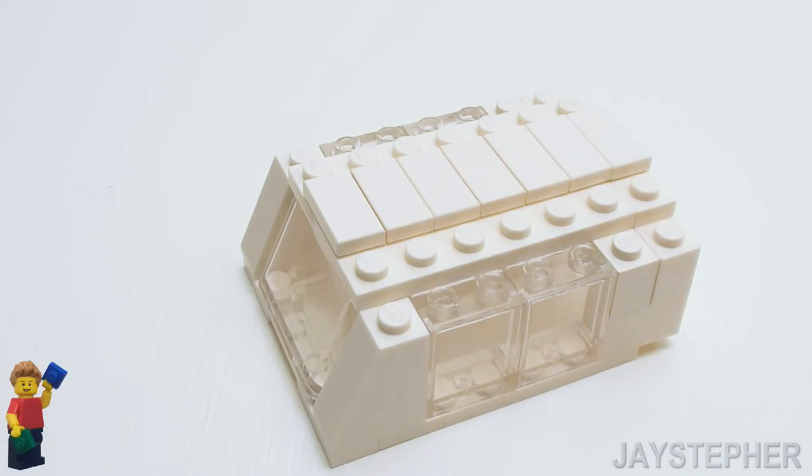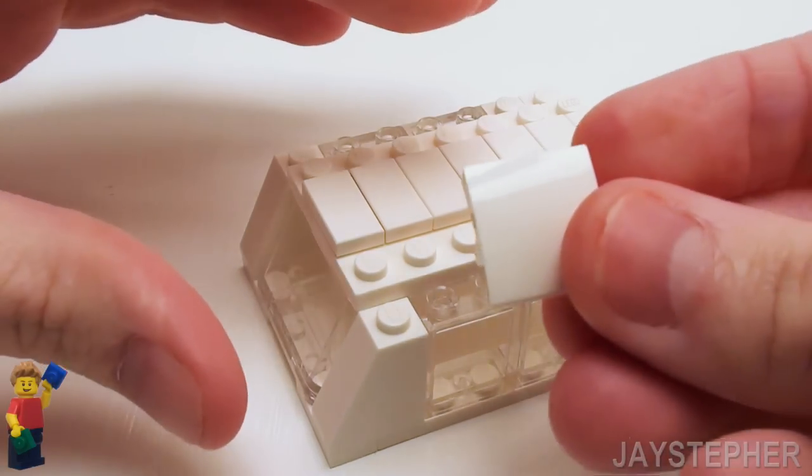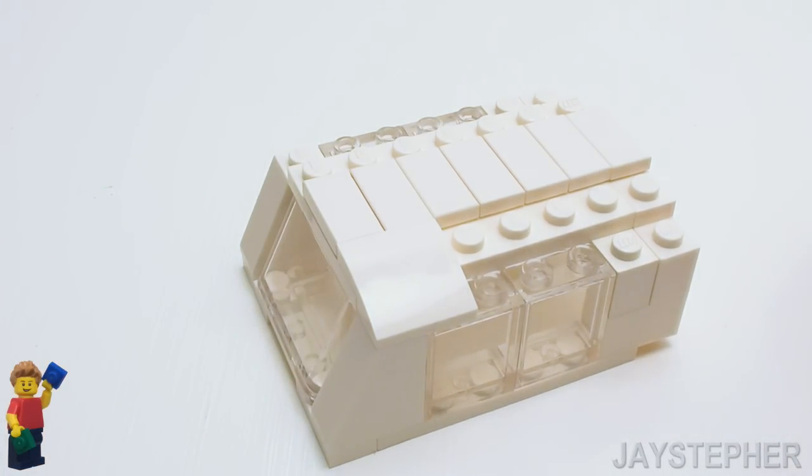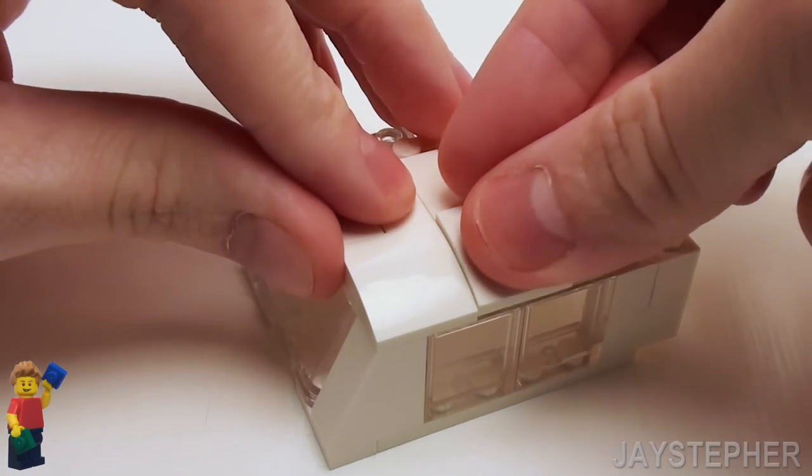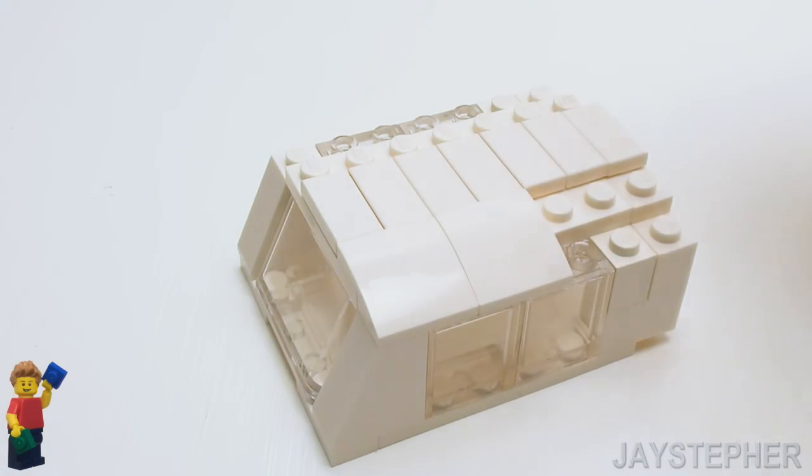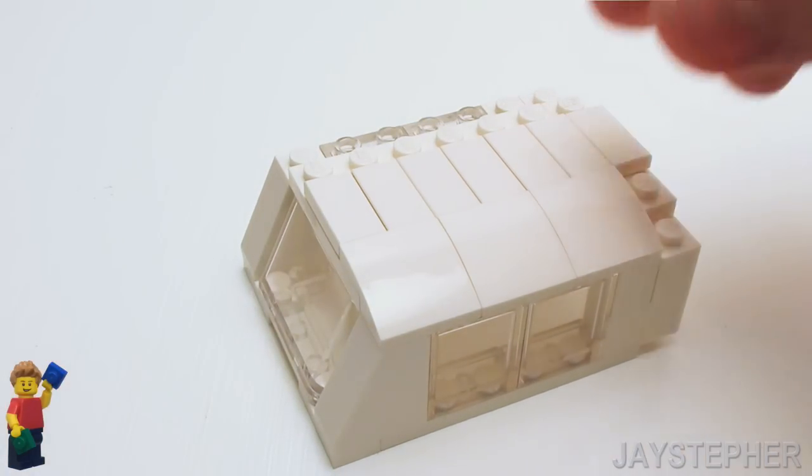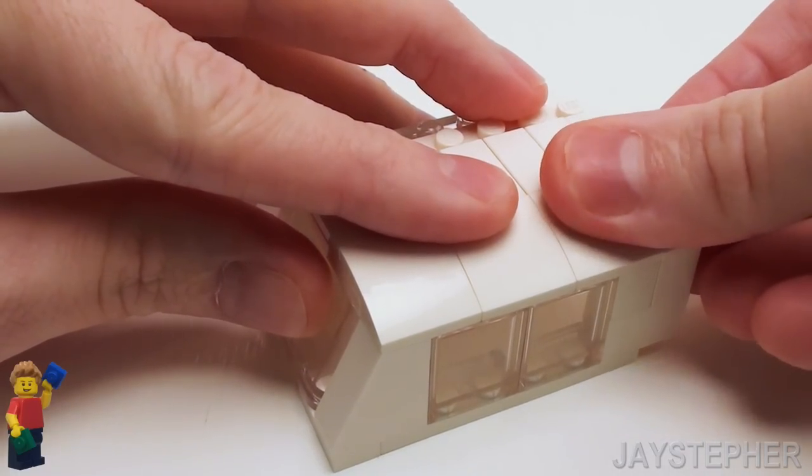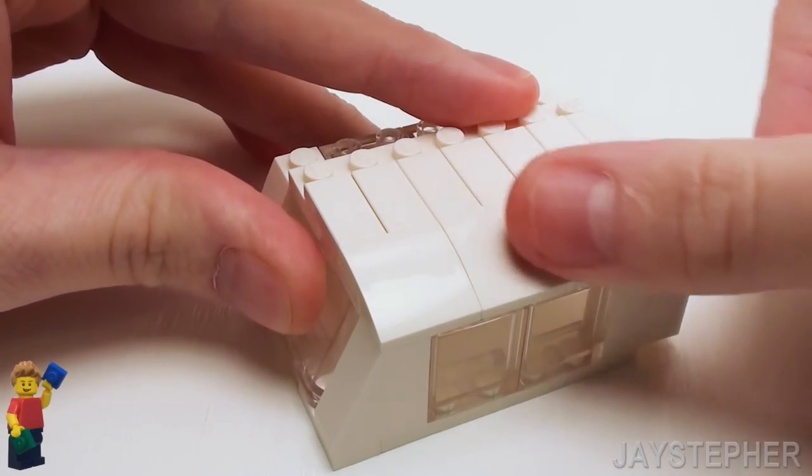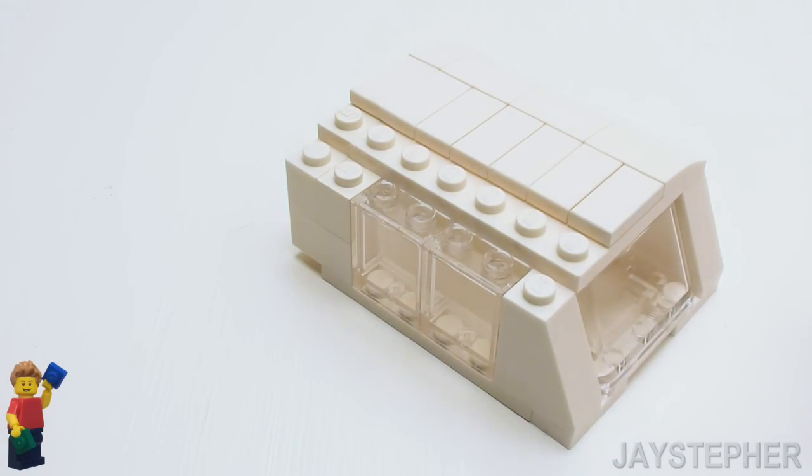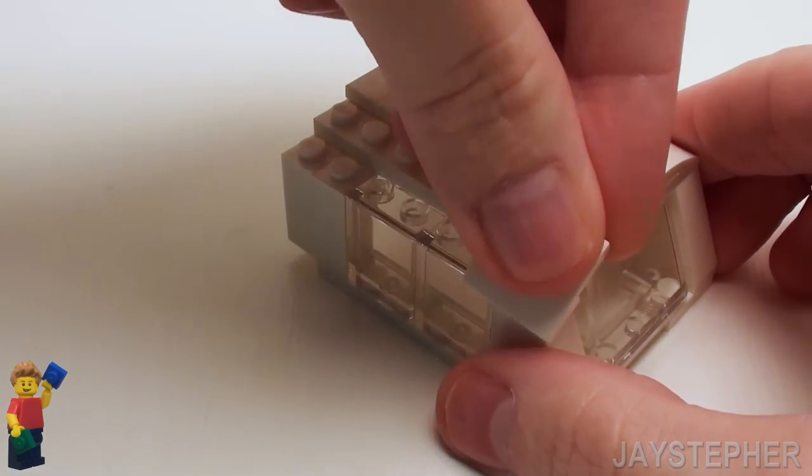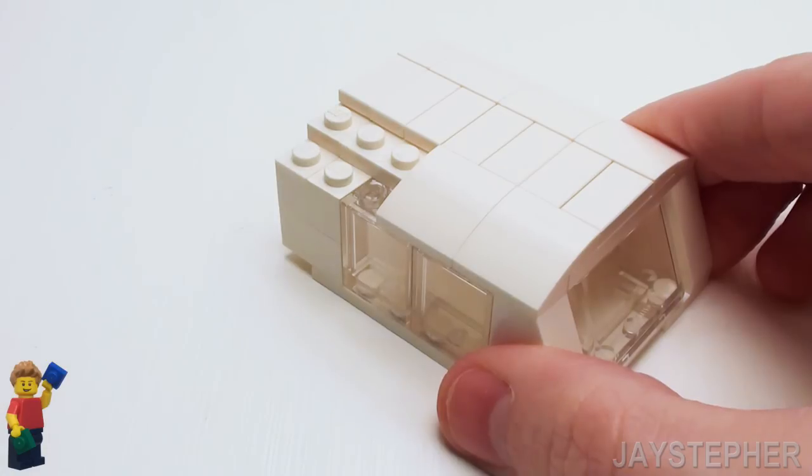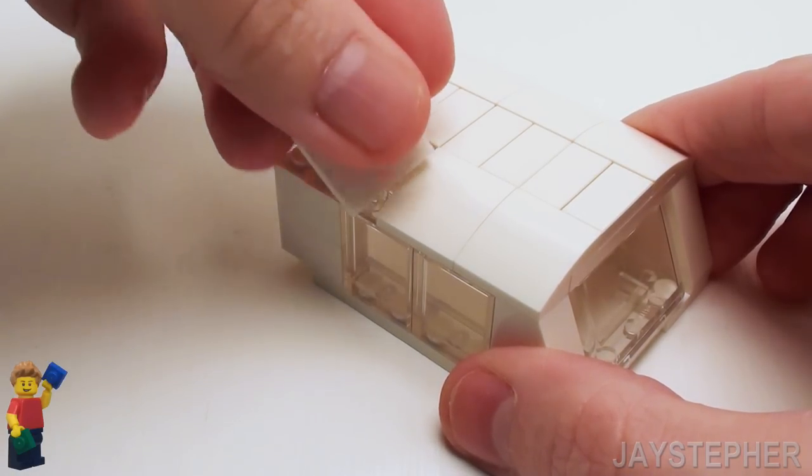Now on this side, we're going to take 3 2 by 2 plates with bow. I'm going to set them right above the side window as well as the back. And on the right-hand side, we're going to take a 1 by 2 plate with bow. Gives it a nice rounded contour. We're going to do the same on this side with 3 more 2 by 2 plate with bow. And a 1 by 2 plate with bow on the left-hand side.